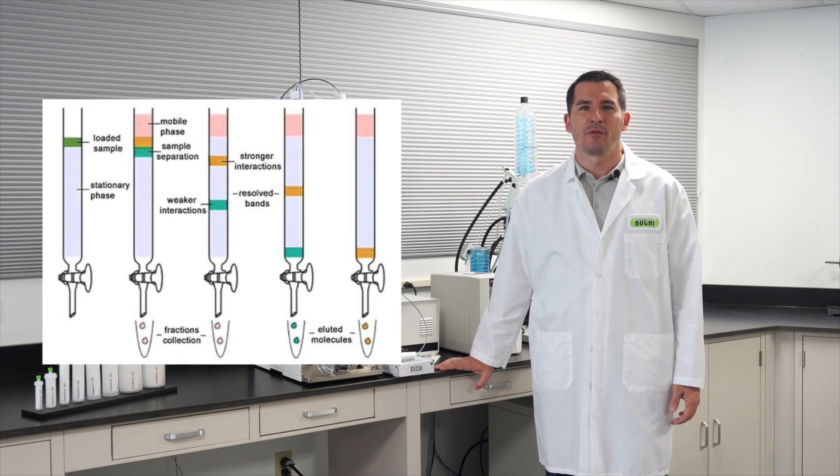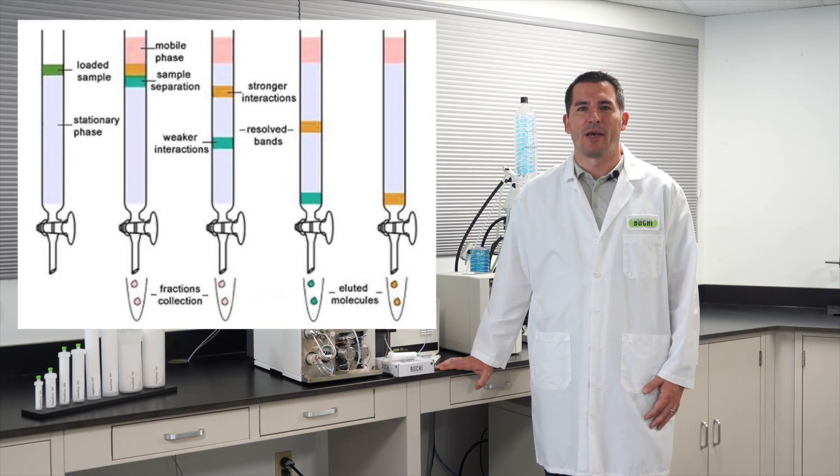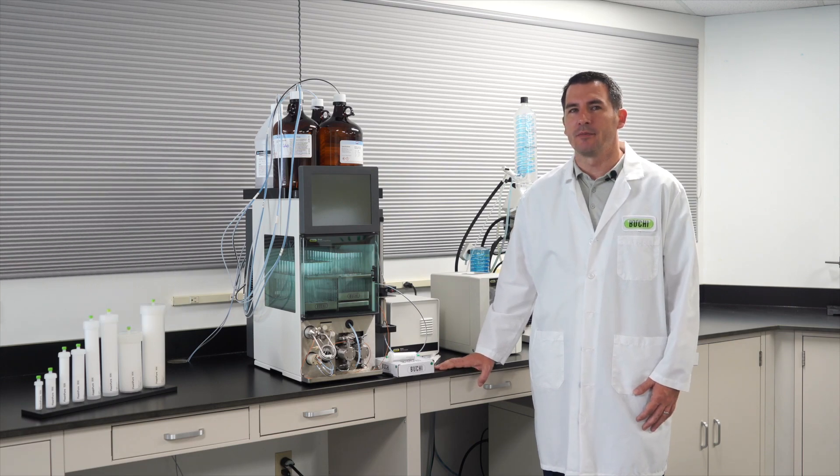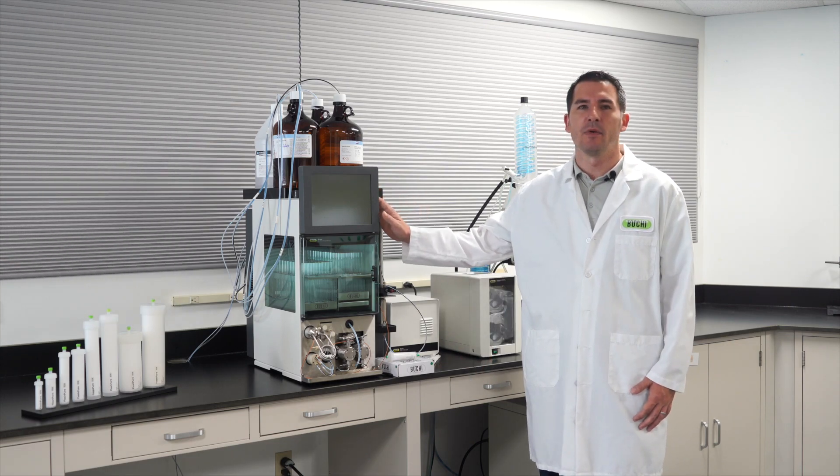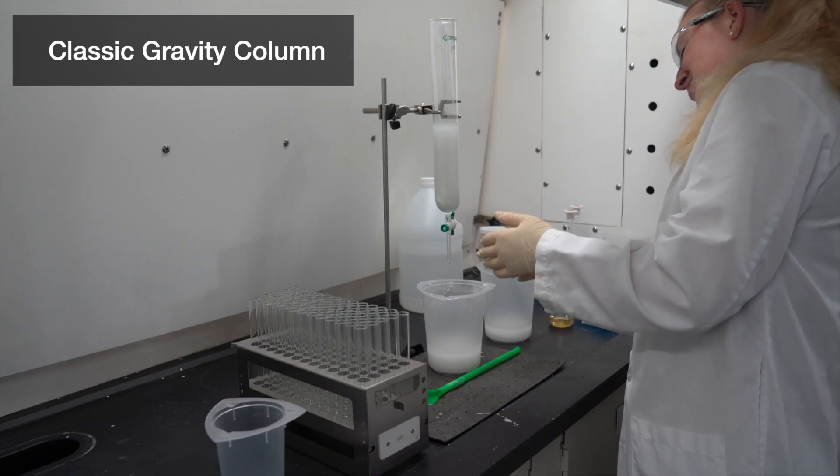Traditional glass column chromatography is an option for separations, but it has a lot of drawbacks. To show you, I'll be doing a standard separation on the automated flash system, while my colleague Matty works on a classical gravity column.